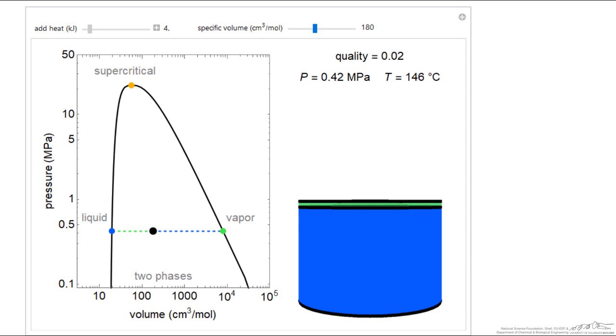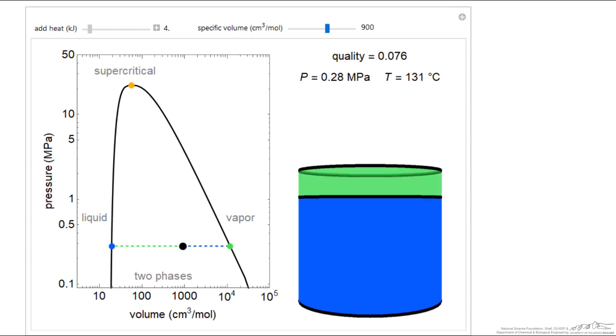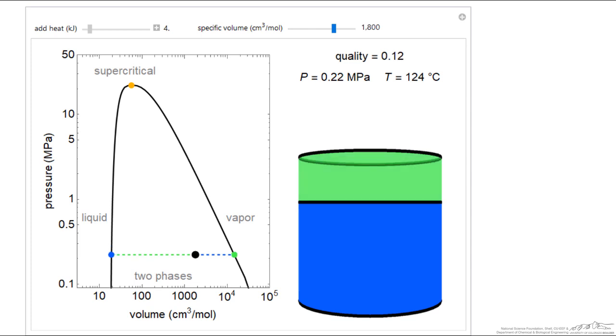This is a log scale. We only have a small 2% by mass is vapor. As I change specific volume, the black dot moves to the right. Keep in mind, it's a log scale for volume and a log scale for pressure. This shows the temperature. We're at saturation temperature and pressure. Obviously we're in the two phase region.